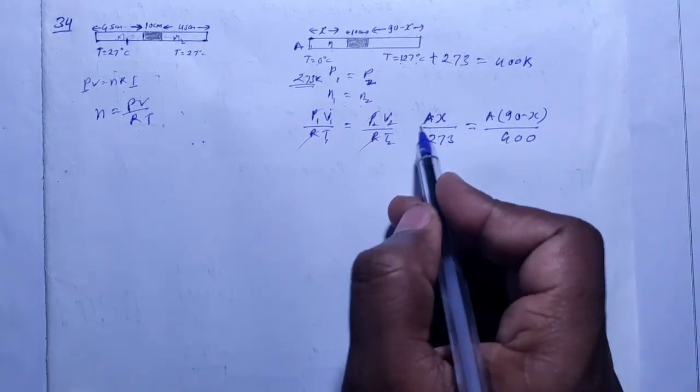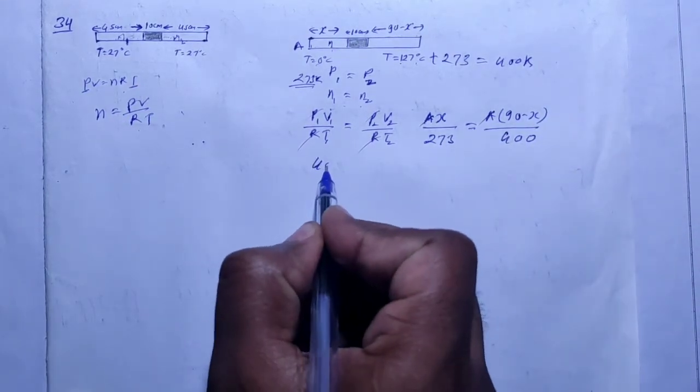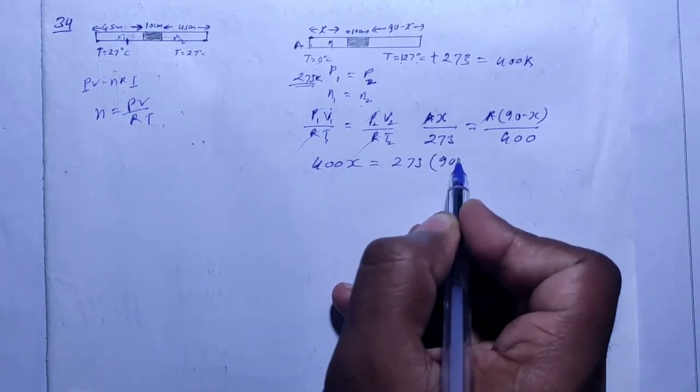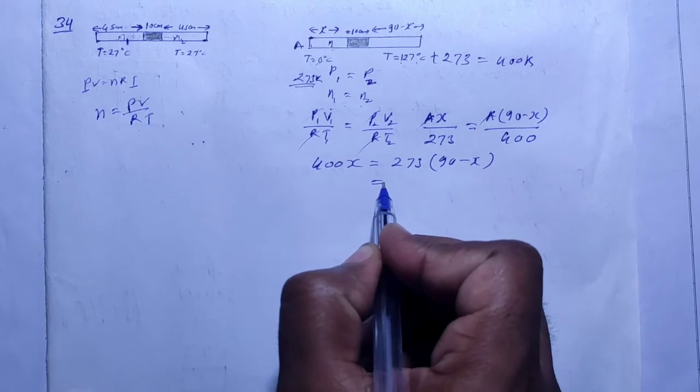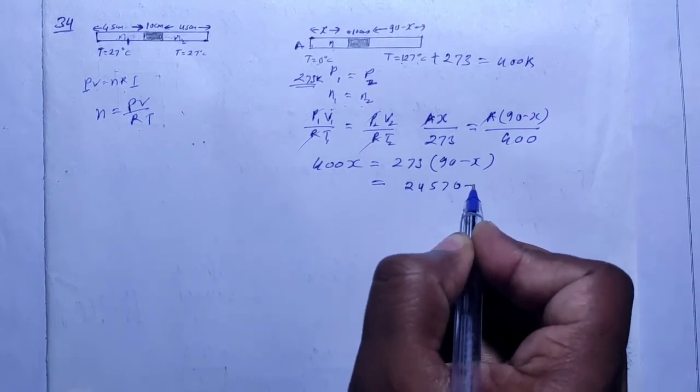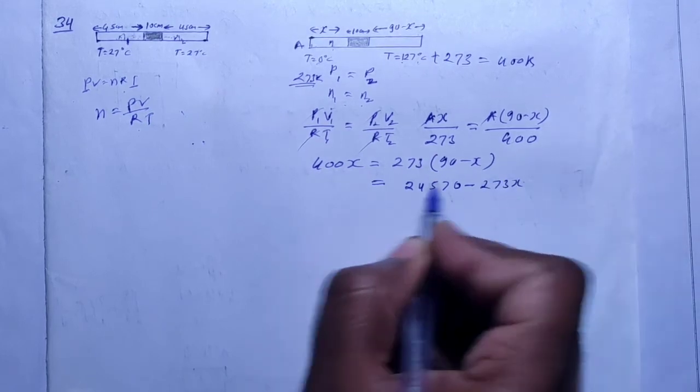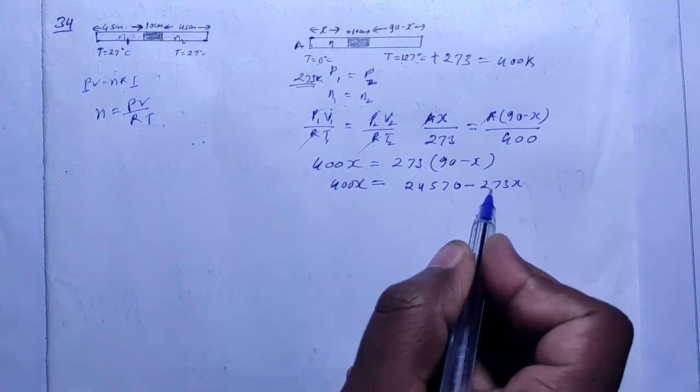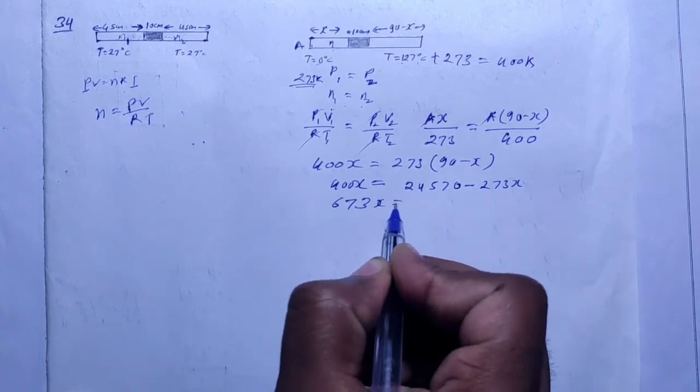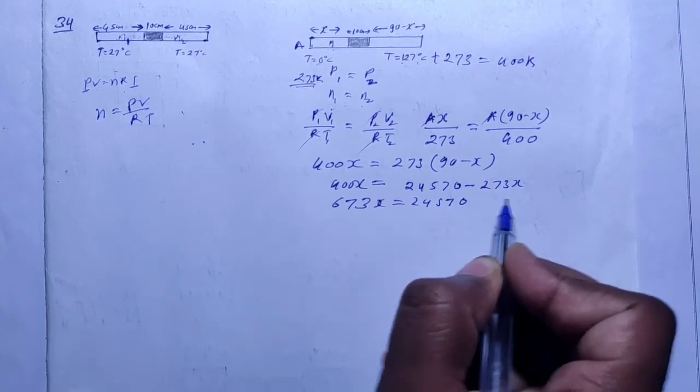Okay, A cancels out. Cross multiply: 400X equals 273 times (90 minus X), right? So this is 90 times 273, how much is it? 24,570 minus 273X equals 400X. So, 673X equals 24,570, okay?